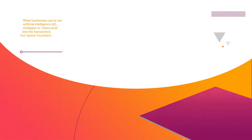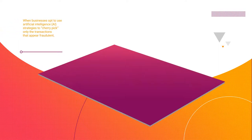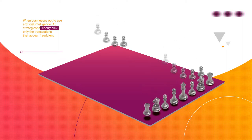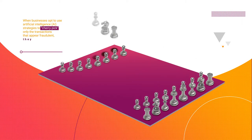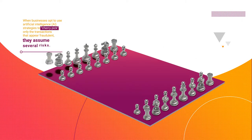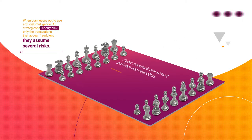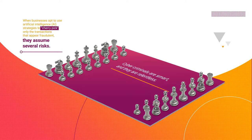When businesses opt to use artificial intelligence and AI strategies to cherry-pick only the transactions that appear fraudulent, they assume several risks. Cybercriminals are smart and they're relentless — they're always testing your fraud prevention system.